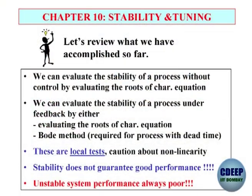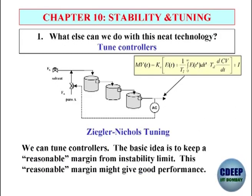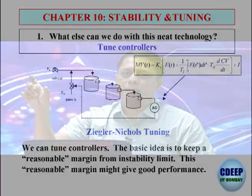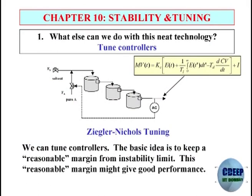The whole problem comes because almost always we have processes with dead time. You cannot go for the roots of characteristic equation approach — you have to go for some other criterion like the Bode stability criterion or the Nichols criterion. The Routh-Hurwitz criterion cannot be used now for systems with time delay. Stability does not guarantee good performance. The first consideration is to make sure the loop is stable. The basic idea of tuning controllers is to keep a reasonable margin from instability. That is why in the Ziegler-Nichols tuning formula, you find the K_c required for marginally stable system and then divide it by half — 50 percent reduction — to keep a good margin from instability.